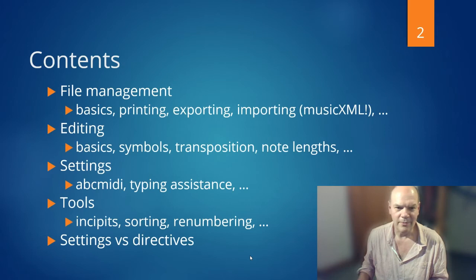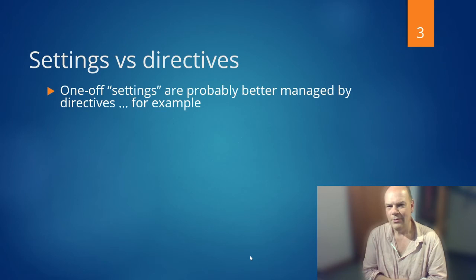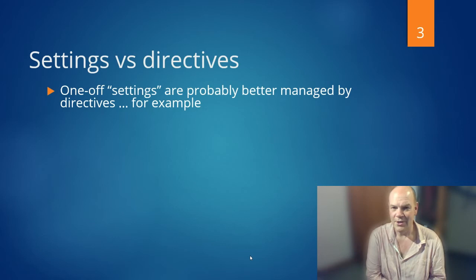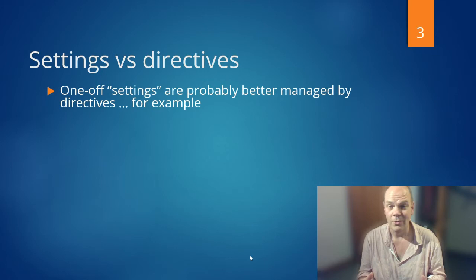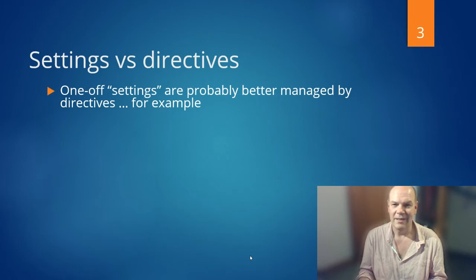Let's talk about settings versus directives. If you want to transpose or change the MIDI for a particular tune — rather than every tune in the file — it's better to use directives. Changing it in EasyABC settings affects all your ABC files. So if you change from piano to saxophone in the settings, it applies everywhere. Instead, use directives within a specific tune.